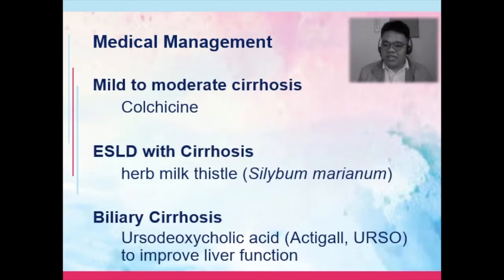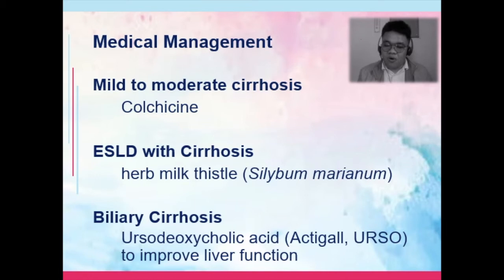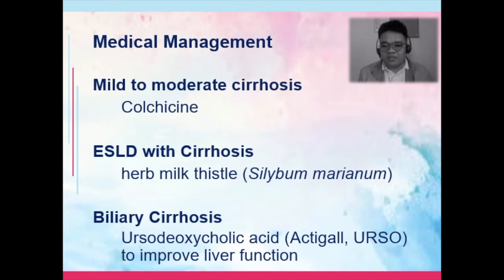Mild to moderate cirrhosis has been treated with colchicine; however, recent studies have shown that colchicine has not improved outcomes of patients with liver cirrhosis. Colchicine is actually a drug for gout that decreases uric acid, but in cirrhosis its effect is not fully explained, and studies show it does not improve outcomes.